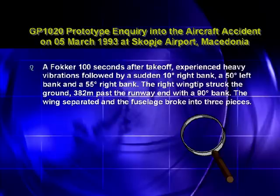The report of the investigation into this accident states that a Fokker 100, seconds after takeoff, experienced heavy vibrations followed by a sudden 10 degree right bank, a 50 degree left bank, and a 55 degree right bank. The right wingtip struck the ground 382 metres past the runway end with a 90 degree bank. The wings separated and the fuselage broke into three pieces.